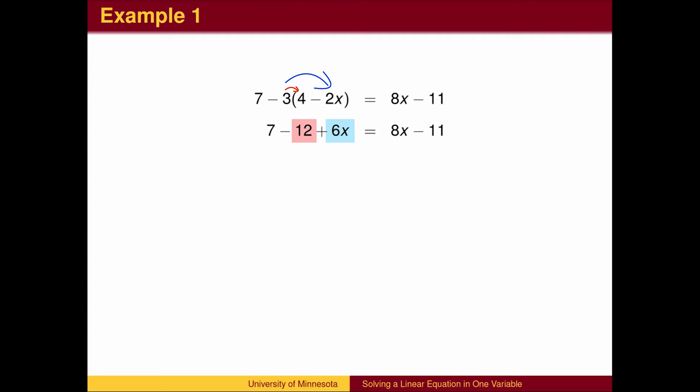The first step is to use the distributive property to expand the parts of the expression in the parentheses. Here, we distribute the negative 3.